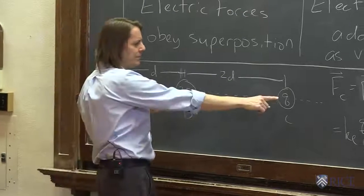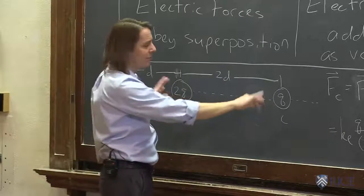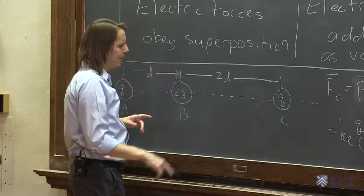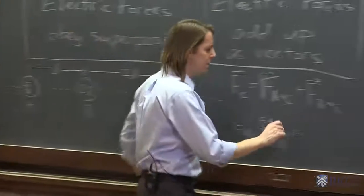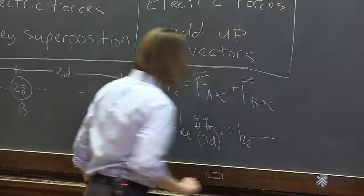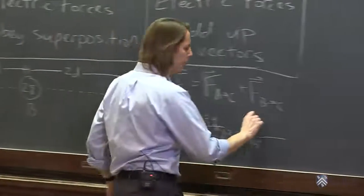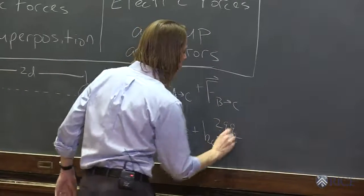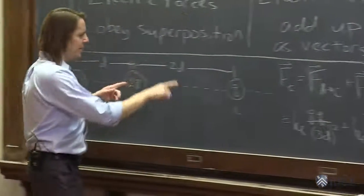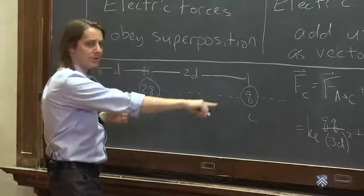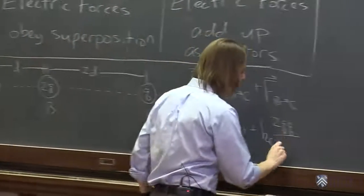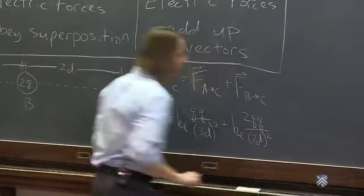And this one, since they're all positive, will also push to the right. So we don't have to deal with the vector aspect right now. This one would be KE times 2Q times Q over, in this case, 2D squared. Because the separation is just 2D.